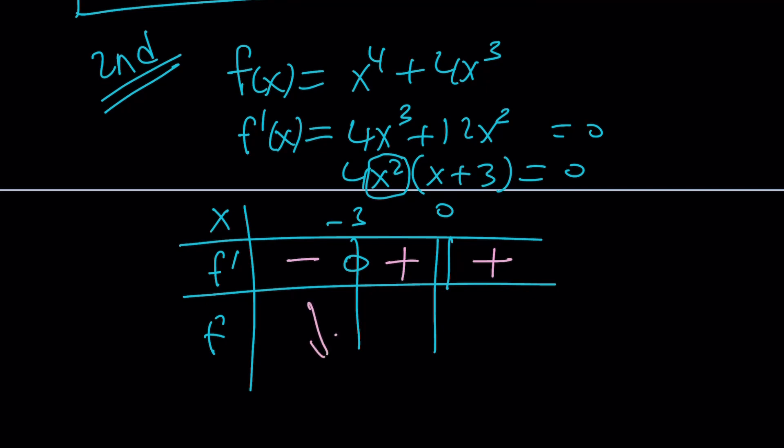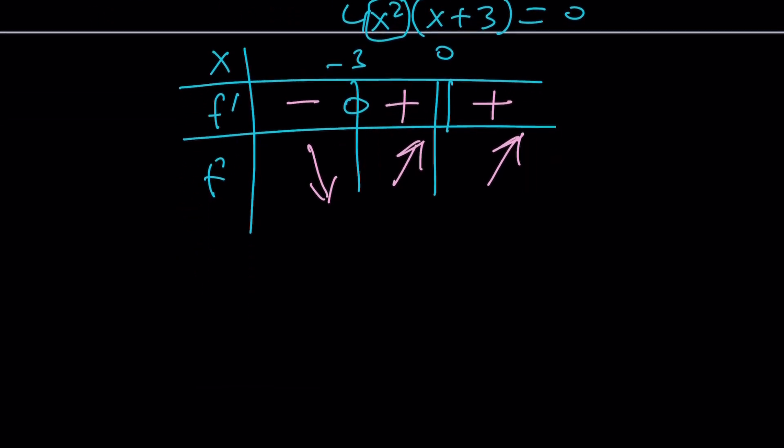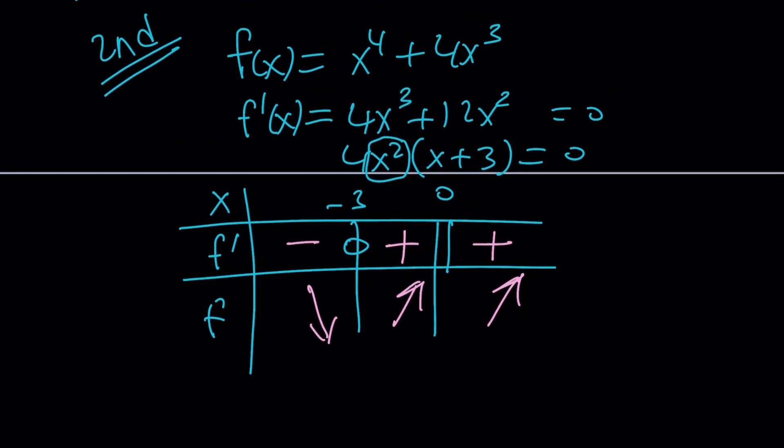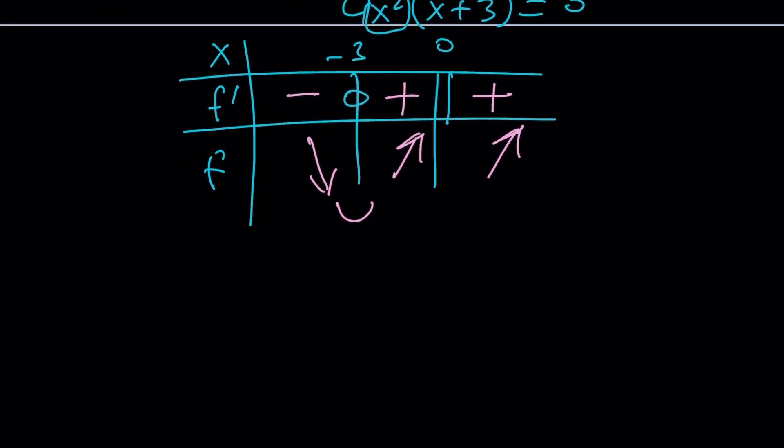So our function is going to be decreasing and then increase and increase. It's going to continue to increase going through 0. But this is good because it gives us a minimum at negative 3. What is so significant about minimum at negative 3 is if you evaluate f of negative 3, remember our function was x to the 4th plus 4x cubed. If you plug in negative 3, you're going to get 81 minus 4 times 27, which is 81 minus 108, which is negative 27.